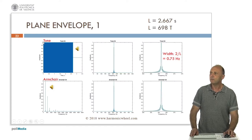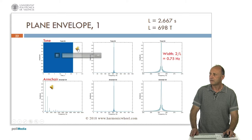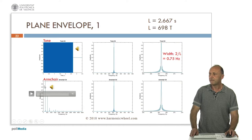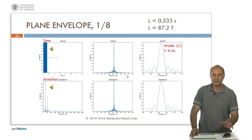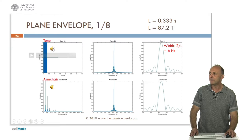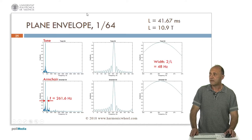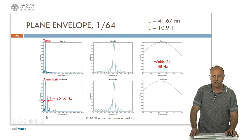Now let's study the effect of the envelope. This is a plain envelope — a whole note for quarter note equal to 90. As we saw, the spectrum is a line whose width is 2 divided by the length, 0.75 Hertz. For the armchair with the same length, we have several lines, each of them equal to the one in the tone. Let's divide the length by 8, so this is an eighth note for a tone. Now the width of the line is 2 divided by the length, which is 6 Hertz. And in the case of the armchair we have several lines, each equal to the one in the tone. Dividing the length by 8 again, the width of the line is 48 Hertz, and in the case of the armchair we can appreciate an overlap.